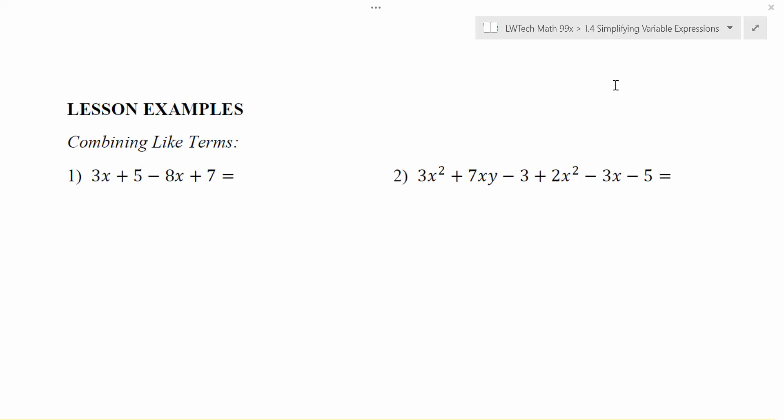Now if we were following order of operations, generally what we would have to do is we'd have to do any multiplications in the problem first, before we could do any additions or subtractions. Right now that would mean you'd have to multiply 3 times x, but I don't know what x is. So I can't really do that very well, but I'd still like to be able to see if there are things that I can combine, can I make this a nicer looking expression?